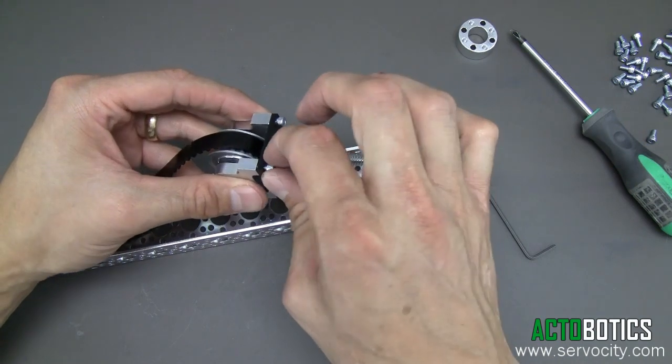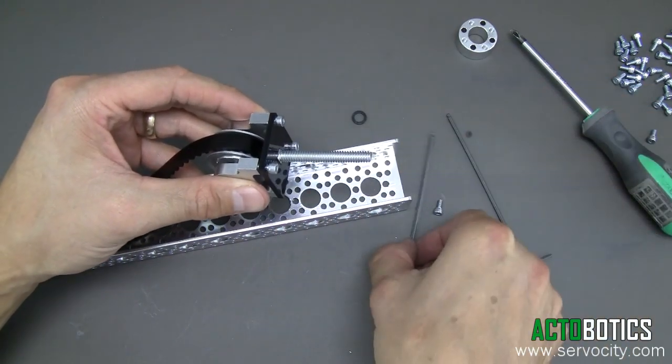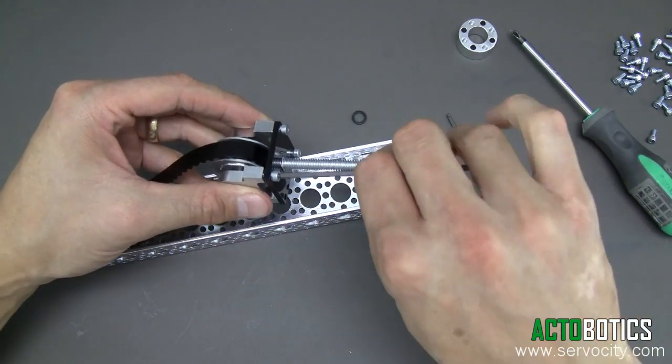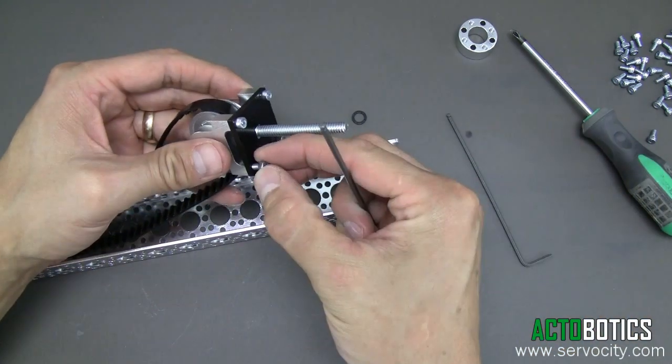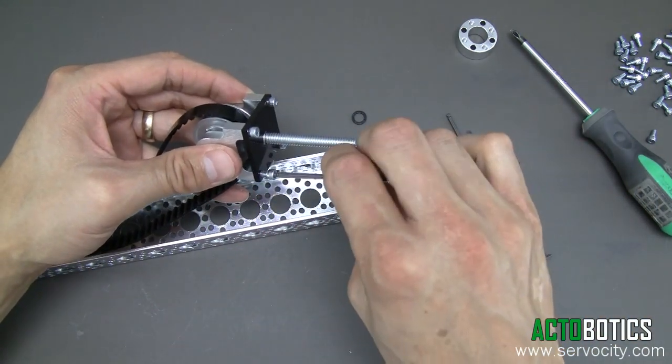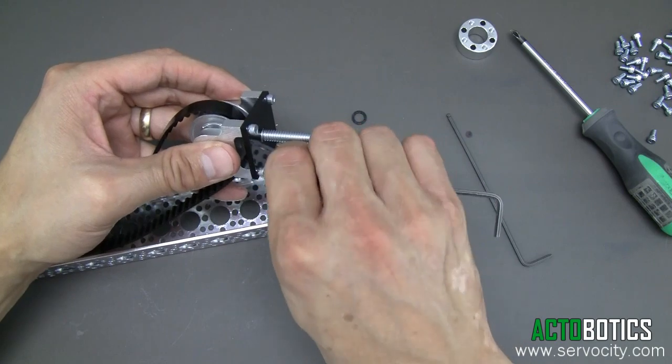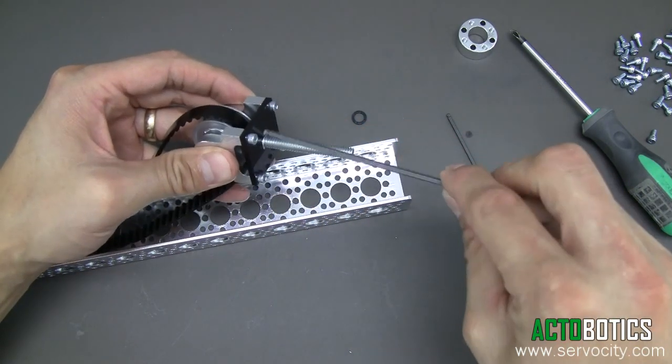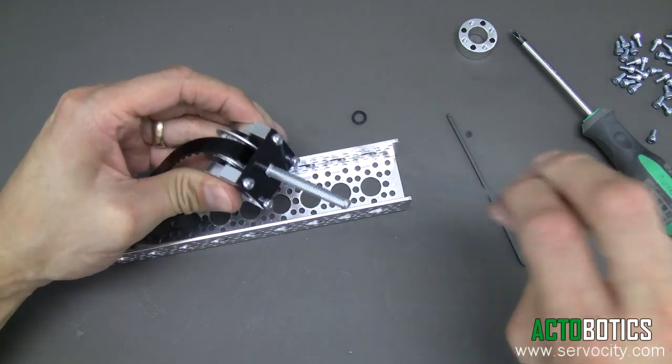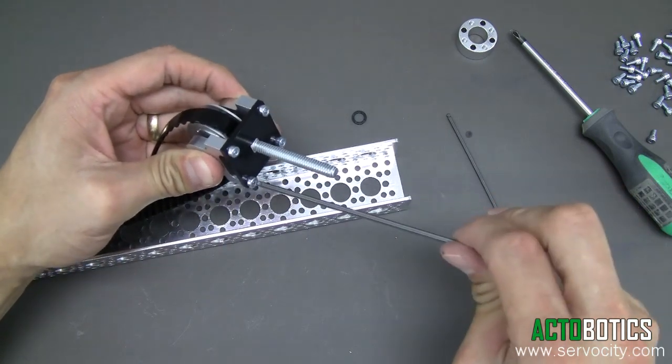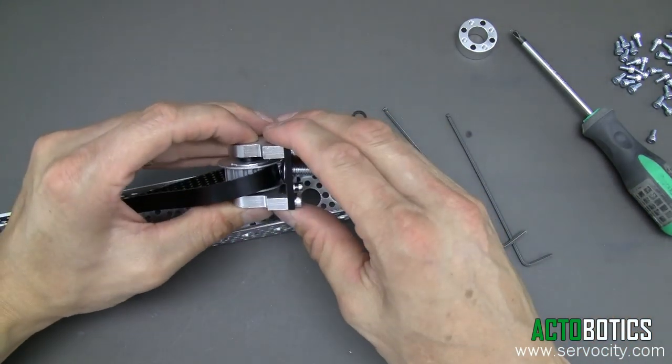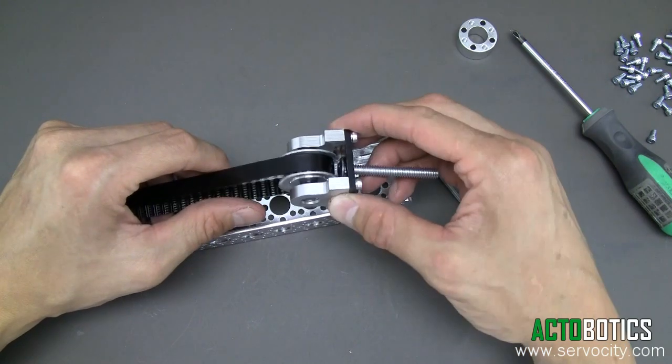Slide that on, grab two more 6-32 by quarter inch length socket head cap screws, and screw those in. Tighten those down, and make sure all four of them are tight. There you go, now you have your idler assembly.